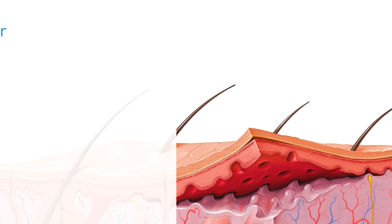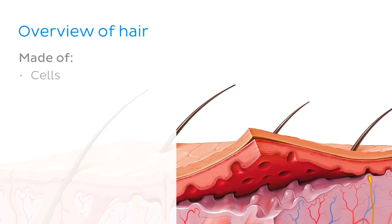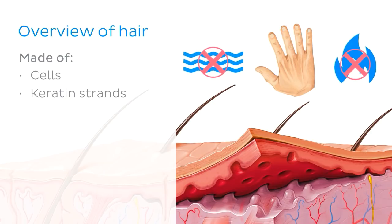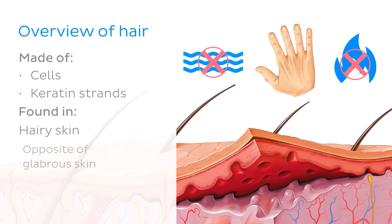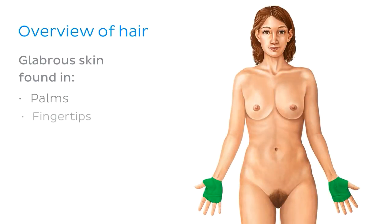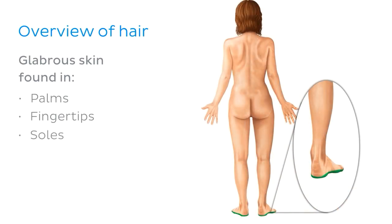Let me give you an overview of hair. Hair fibres are primarily made of cells and keratin strands. Keratin is a protein which also forms your nails and helps your skin be waterproof and resistant to damage. Hair is unsurprisingly found in hairy skin — the scientific name for this type of skin, the opposite of glabrous or hairless skin. Hairy skin covers most of the body, with glabrous skin normally only present on the palms of the hands, fingertips and soles of the feet.